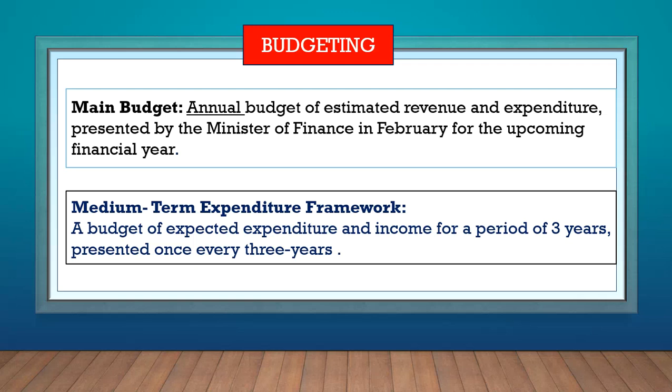Let's look at budgeting. There are two types of budgets. The main budget is presented annually in February by the Minister of Finance, once every year, and this budget will be for the next financial year. The financial year of the country starts on the 1st of March until the end of February the next year, so the Minister of Finance will present the budget for the next financial year.